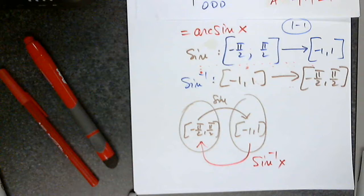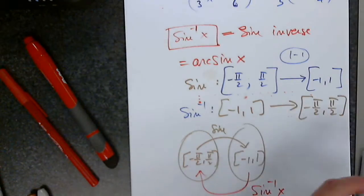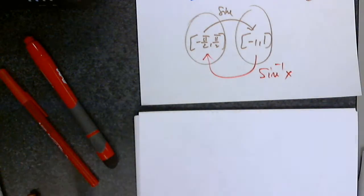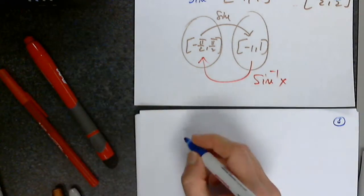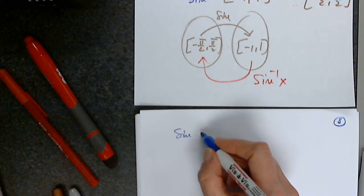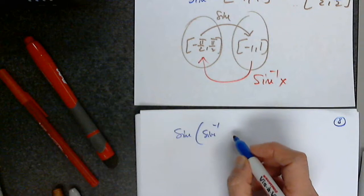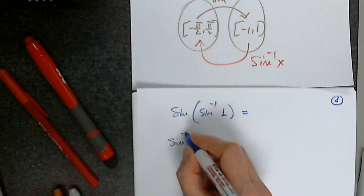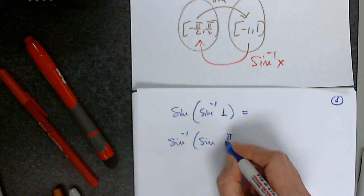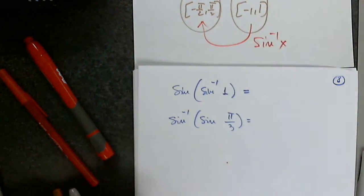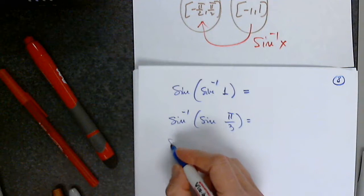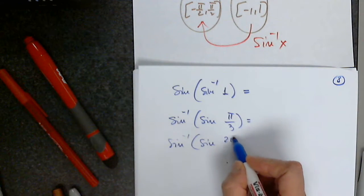An angle — is that clear? So now I have a couple of questions for you. Sign of sine inverse of 1. Then I want sine inverse of sine pi over 3. And then I want sine inverse of sine 2 pi over 3.